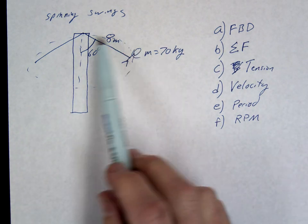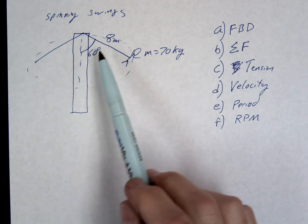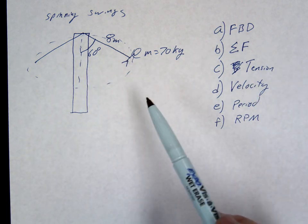Okay, so in this problem we have our guy swinging around, making an angle of 60 degrees. So let's do the FBD first.